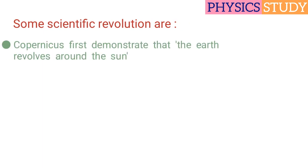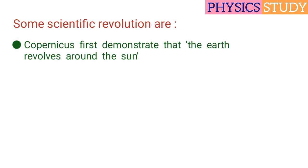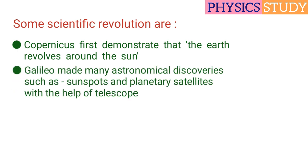Some scientific revolutions are: Copernicus first demonstrated that the Earth revolves around the Sun. Galileo made many astronomical discoveries such as sunspots and planetary satellites with the help of telescope.